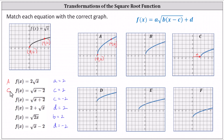For the third function, we have c equals negative two, and therefore the square root function is shifted left two units. Analyzing the remaining graphs, we can see this is graph E, where the square root function has been shifted left two units.